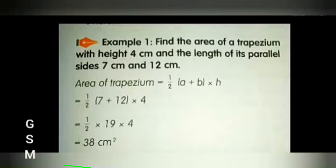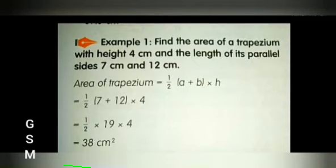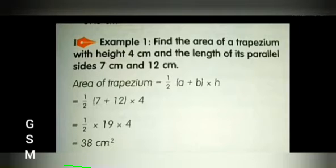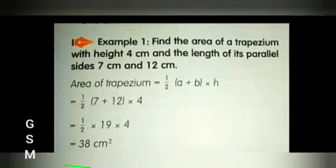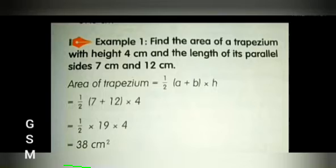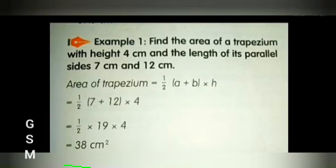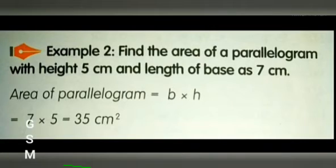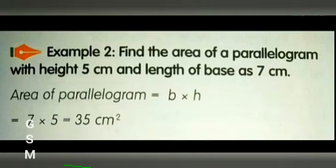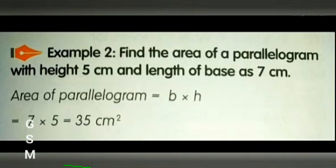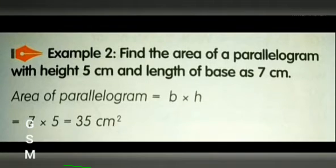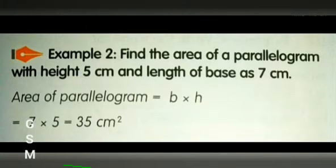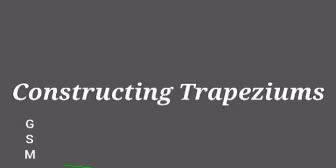Let us see an example. Find the area of a trapezium using the area of trapezium formula. Next example: find the area of a parallelogram with height 5 cm and length of the base 7 cm. We know that the area of a parallelogram equals b into height, which equals 7 into 5, equal to 35 cm squared.